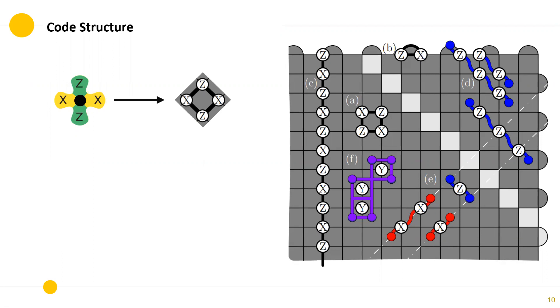Unlike the conventional surface code, all stabilizers are the same in the XZX code. B is an example for a boundary stabilizer.